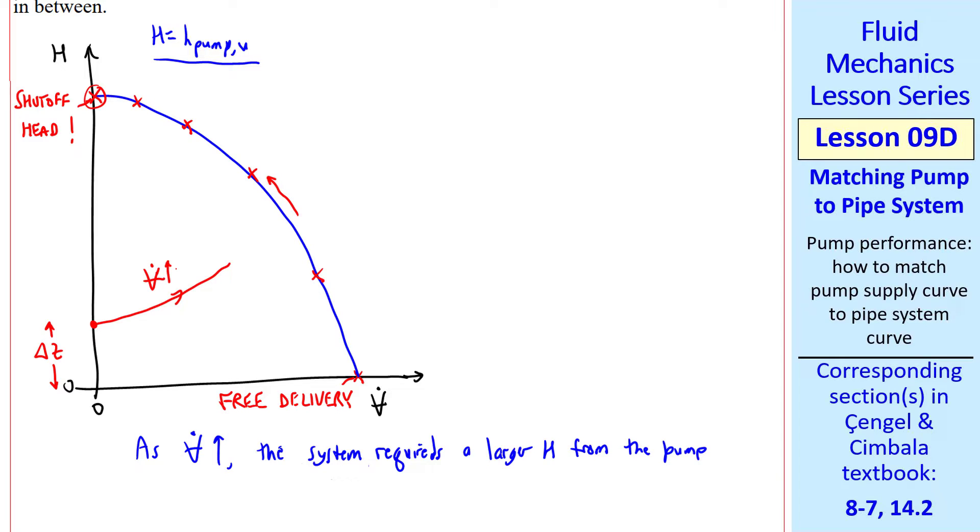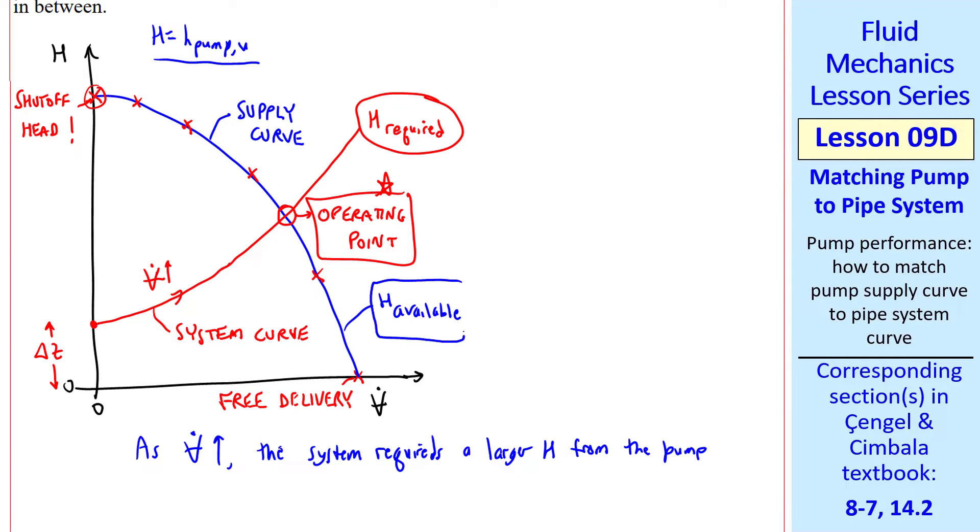The curve typically slopes up like this as V dot increases. At this point, we'd need a pump that can supply this much head at this flow rate. Again, we have a heftier pump than that, but as we keep going up in volume flow rate, eventually this curve crosses our pump performance curve. Our pump would not be able to deliver anything beyond this point where these curves cross. In fact, this point is the operating point. We typically label these curves the supply curve. This is the head supplied by the pump and the system curve, which is what the pipe system requires.